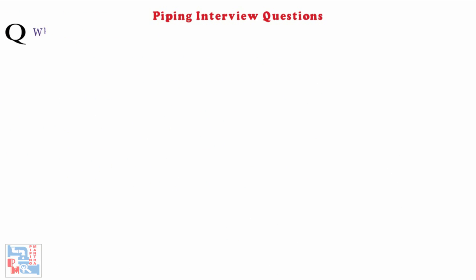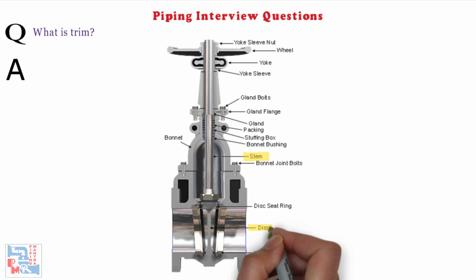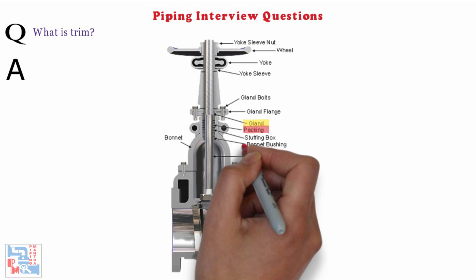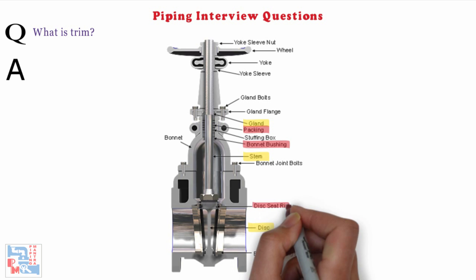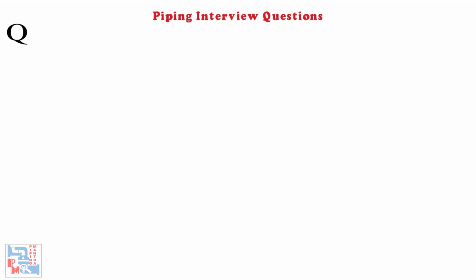Next, what is trim? Trim is composed of stem, disc, gland, bonnet bushing, seat ring and other small internal parts that normally contact the service fluid. All parts that come in contact with the service fluid are wetted parts.